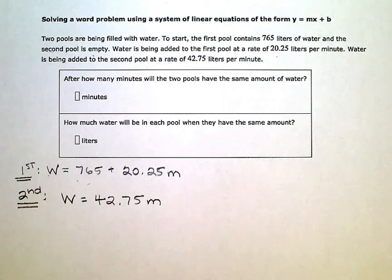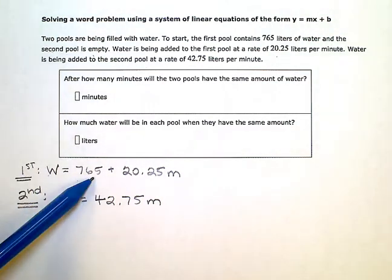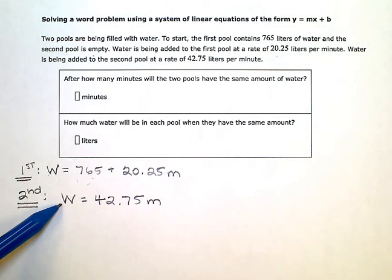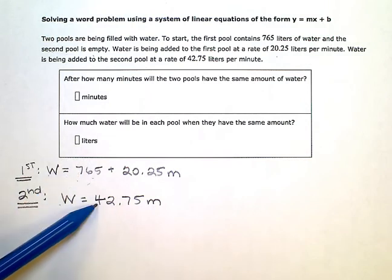And now I need to solve this system. Since they're both equal to w—w is equal to this expression, and w is also equal to that expression—I know that these two expressions must also be equal to each other.